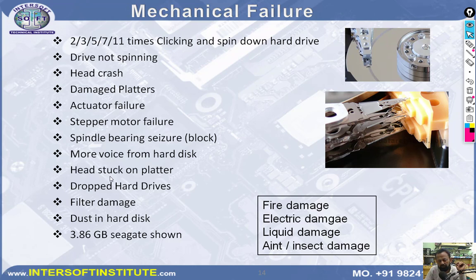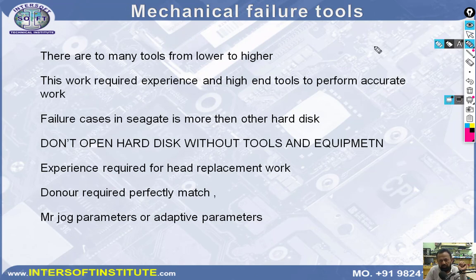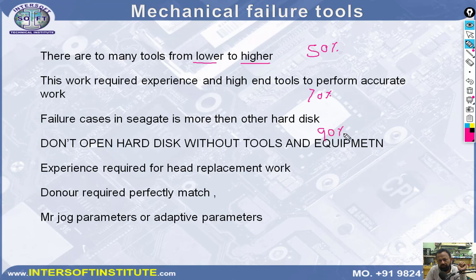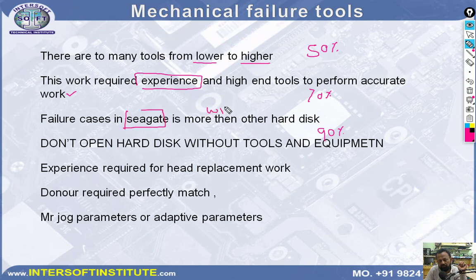Head stuck on the platter means the head cannot move. Drop damage, hard drive filter damage, wrong capacity showing (e.g., 3.86 GB or 128 GB in Seagate), fire damage, electric damage, and liquid damage are all mechanical failure scenarios. For recovery, specialized tools are needed — from lower range to higher range. With lower tools, success rate is lower; medium tools give around 70%; high-end tools can reach up to 89% accuracy. Physical recovery requires both experience and high-end tools. Seagate physical failure cases are more common and harder than WD.